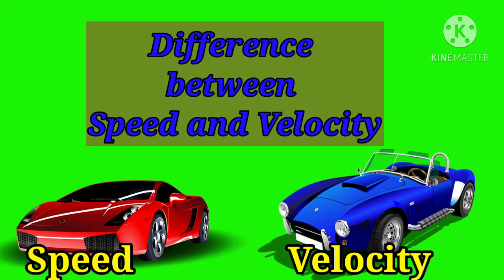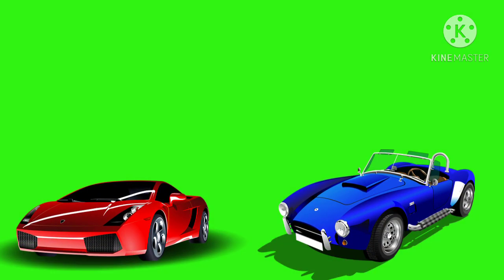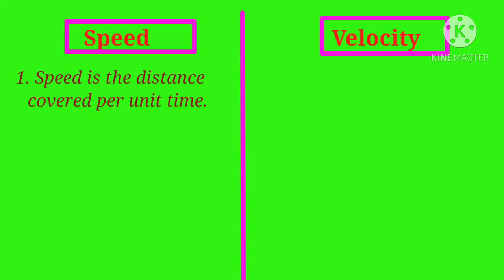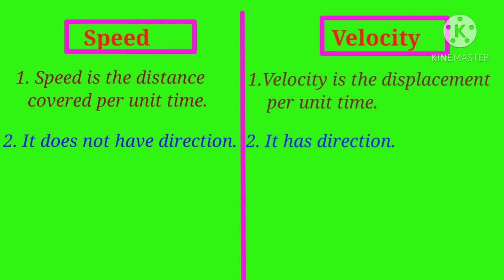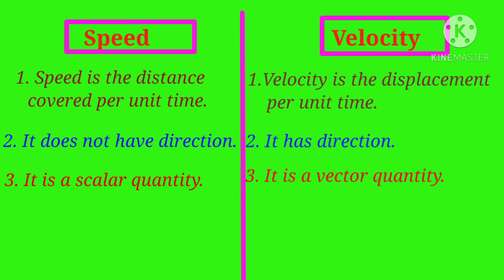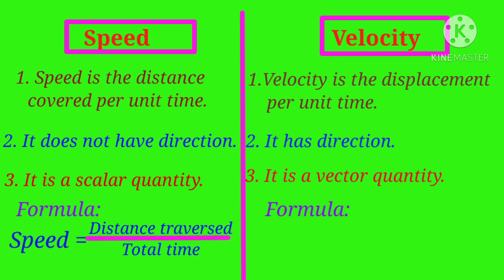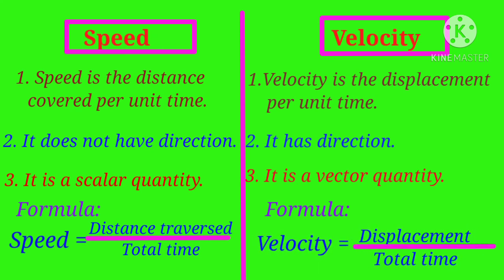Differences between speed and velocity: Speed is the distance covered per unit time, while velocity is the displacement per unit time. Speed does not have direction, while velocity has direction. Speed is a scalar quantity, while velocity is a vector quantity. The formula for speed is: Speed = Distance traversed / Total time, while the formula for velocity is: Velocity = Displacement / Total time.